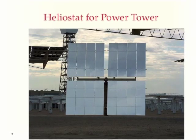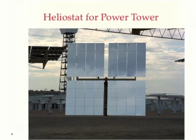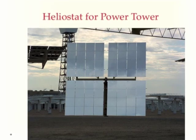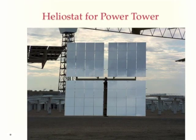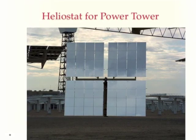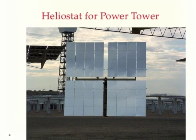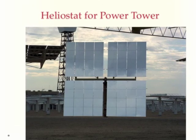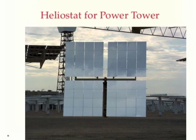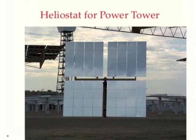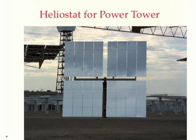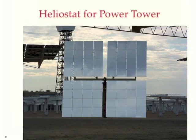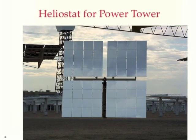The mirrors in the power tower system are called heliostats. These are flat, and they are rotated on their base and tilted so that they direct the sunlight to the absorber at the top of the tower.